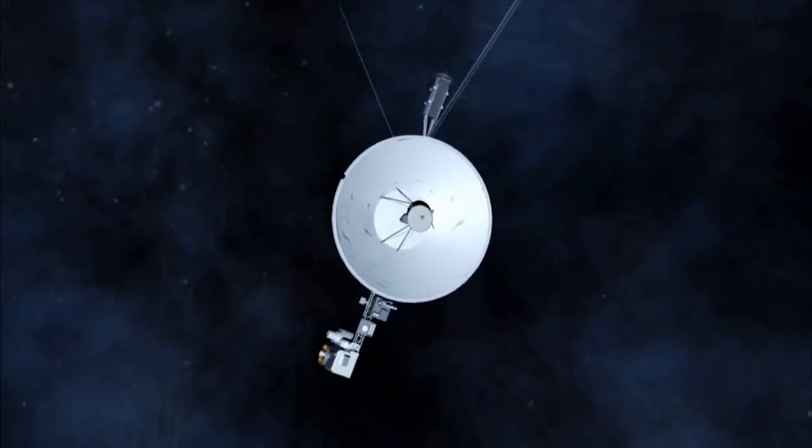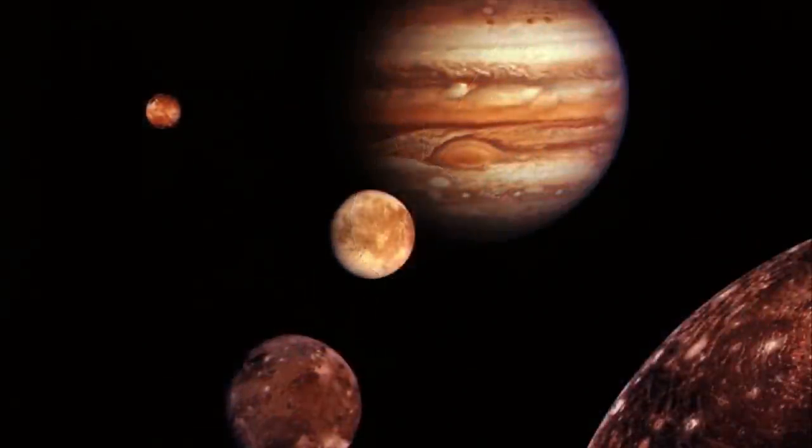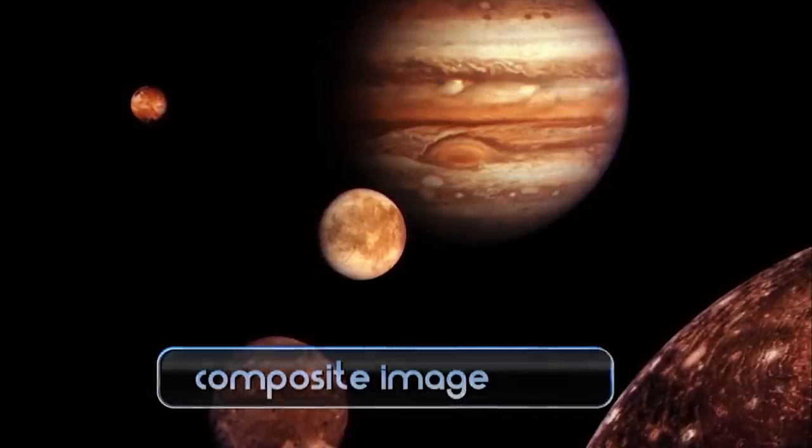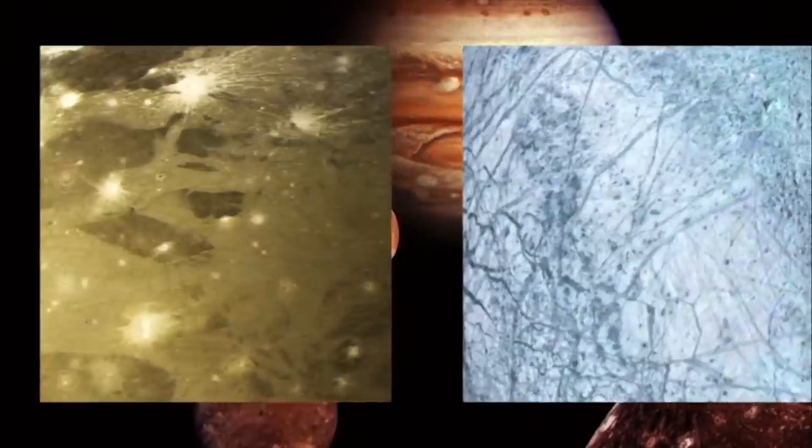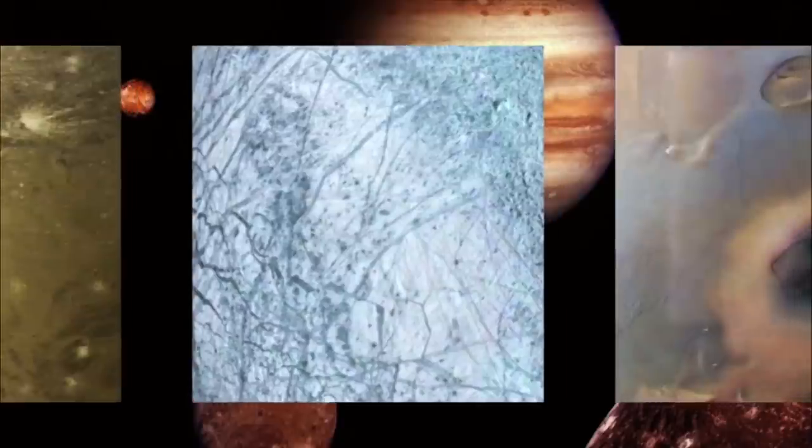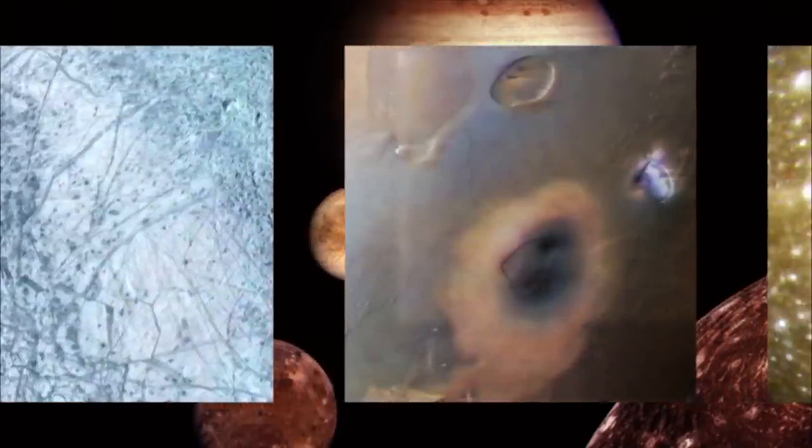In 1979, Voyager 1 and Voyager 2 sailed past Jupiter's four largest moons with their cameras rolling. The pictures they radioed back reveal that each moon has its own distinct character and a range of features unlike anything seen before.